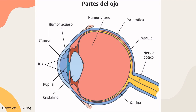Entrando en la estructura anatómica afectada, el ojo tiene muchas partes: el iris, la córnea, humor acuoso, la pupila, el cristalino, el humor vítreo, la esclerótica, la mácula, la retina y, por supuesto, el nervio óptico.